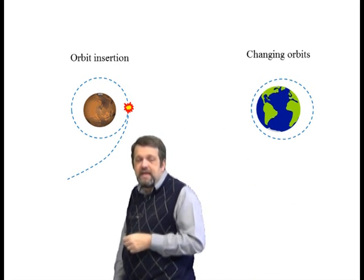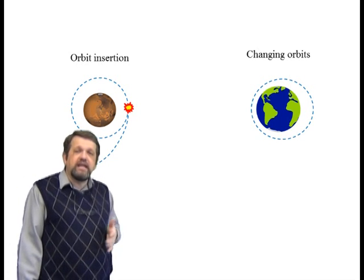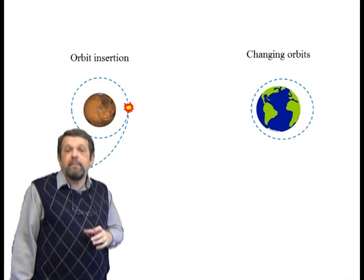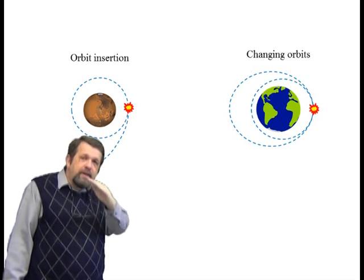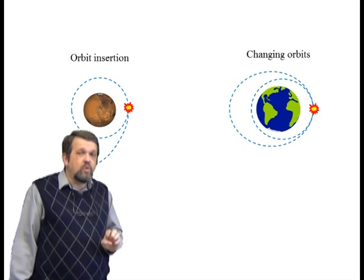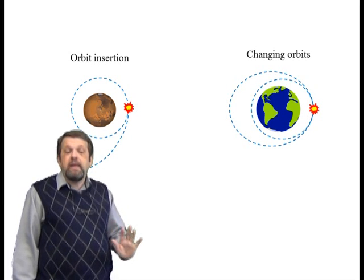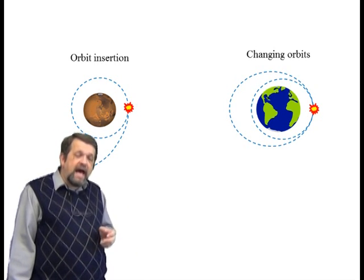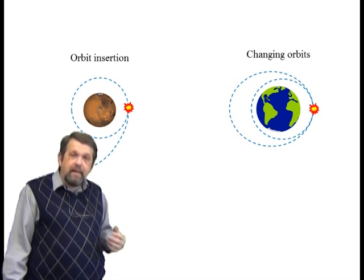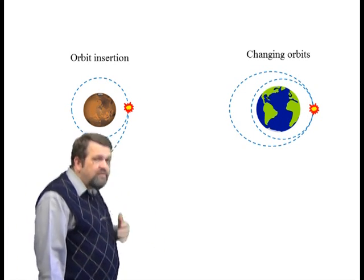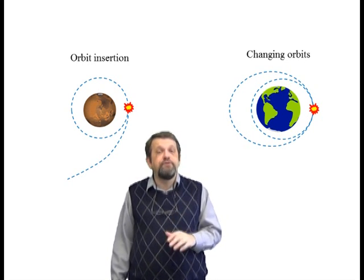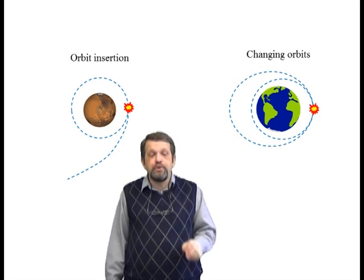Another example is changing orbits. Imagine a satellite in orbit around Earth where the perigee is too low — perhaps passing through the atmosphere. We fire the rocket motors, changing the orbit's energy and therefore its semi-major axis. By the techniques we've discussed, we can calculate how much delta-V is required for a particular orbit change, and then apply Tsiolkovsky's equation to find the fuel requirements.